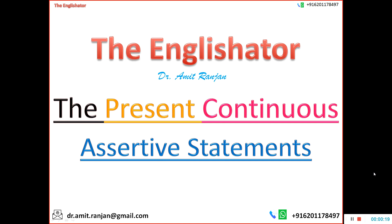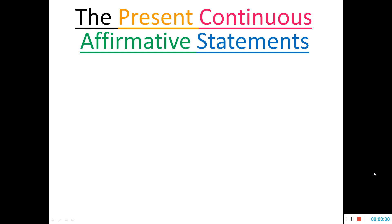Now we know that assertive sentences are of two types: affirmative sentences and negative sentences. So I will first start with the affirmative sentences. Let us see what is the basic formula of the affirmative sentences in the present continuous tense.